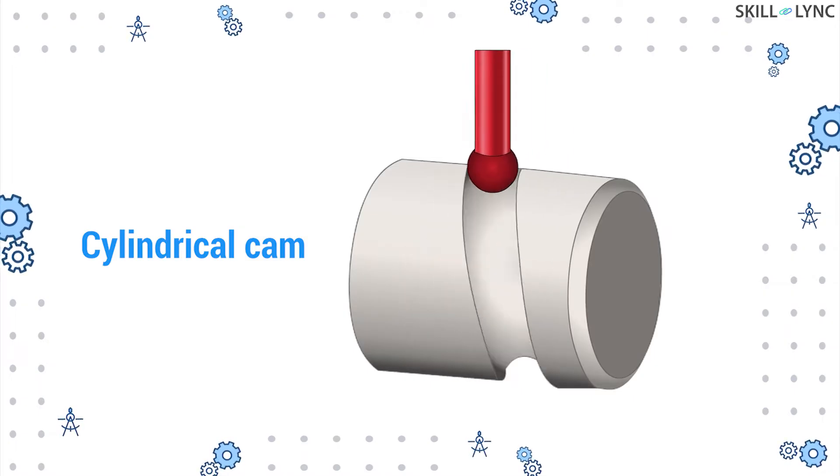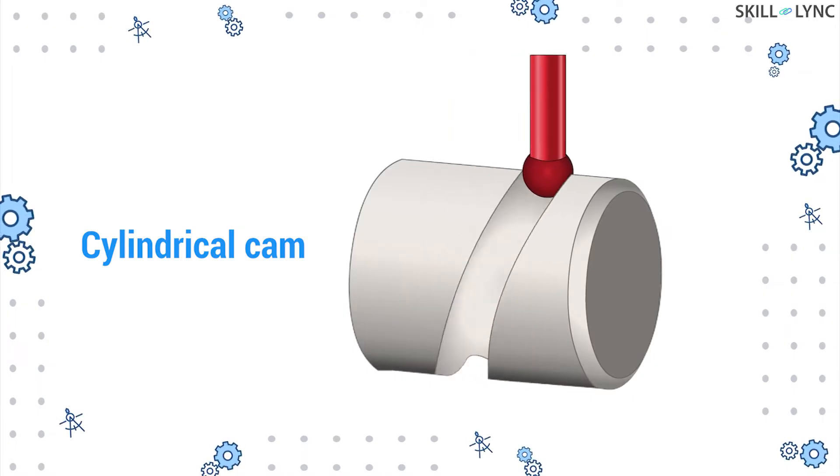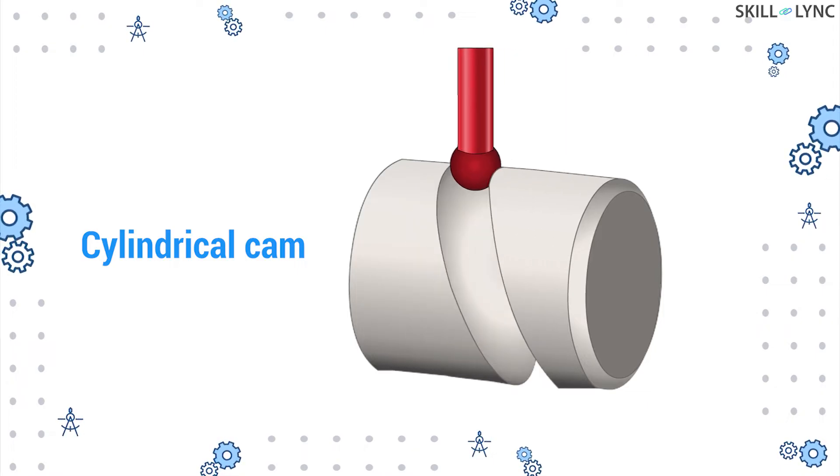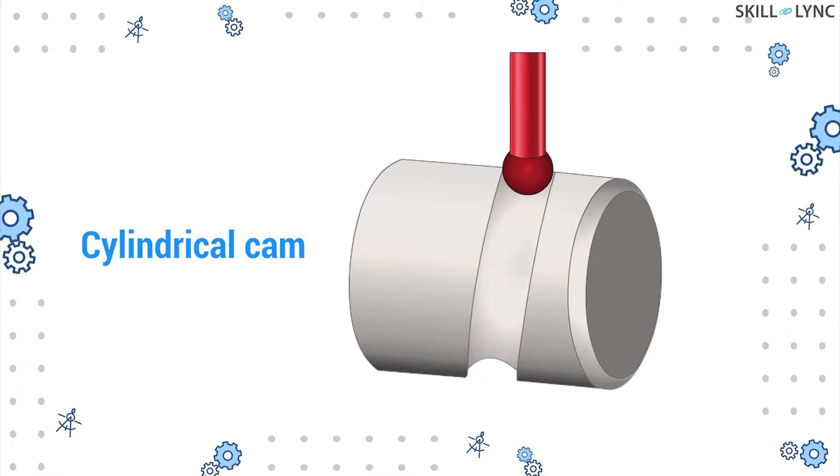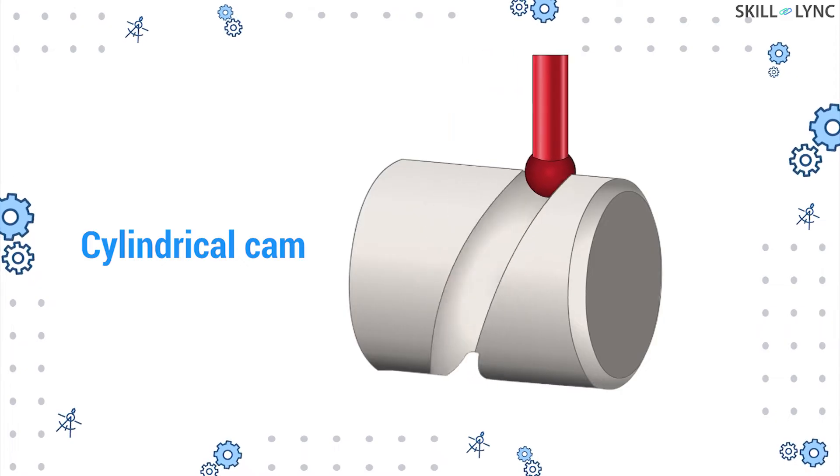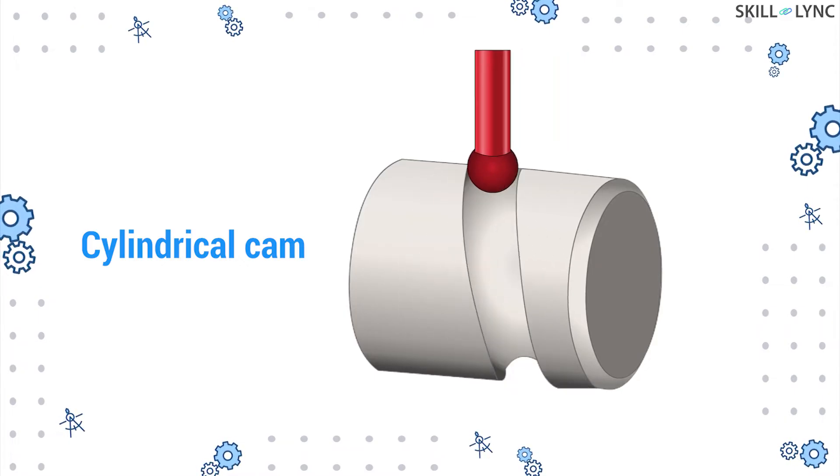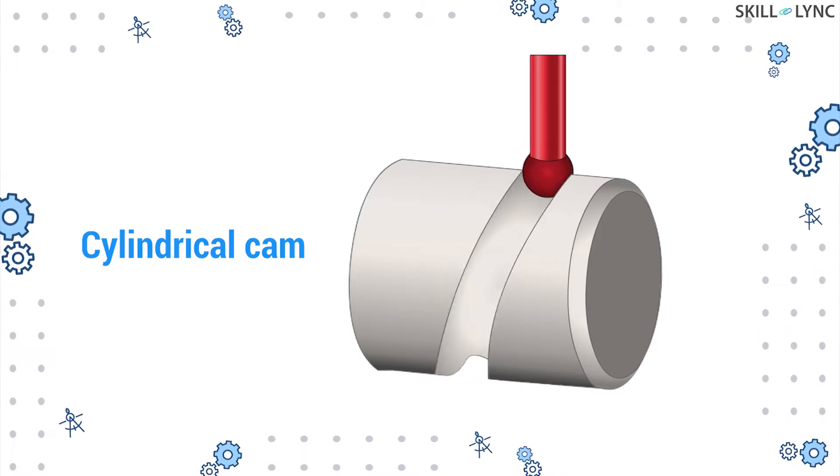The next type is the cylindrical cam which is also known as a barrel or drum cam. This cam has a cylindrical shape and there is a groove cut on its surface. The follower follows the path of the groove. In this type, the axis of the cam is parallel to the direction of motion of the follower.